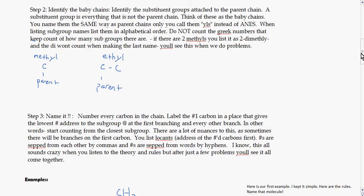Step two, identify the baby chains. You need to identify the substituent groups that are attached to the parent chain. A substituent group is everything that is not the parent chain. Think of these as your baby chains. You then name the same way as the parent chains, only you call them yls instead of anes. So if you have a single carbon hanging off, that would be a methyl group. Two carbons would be an ethyl group instead of like an ethane.